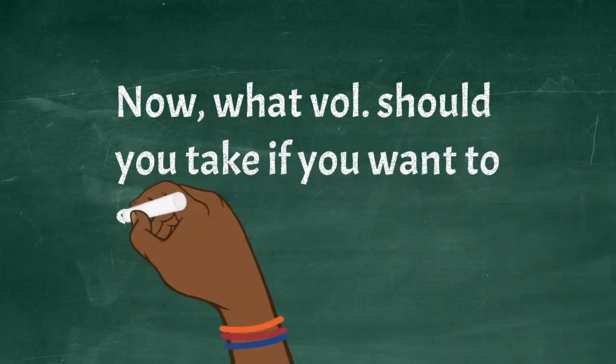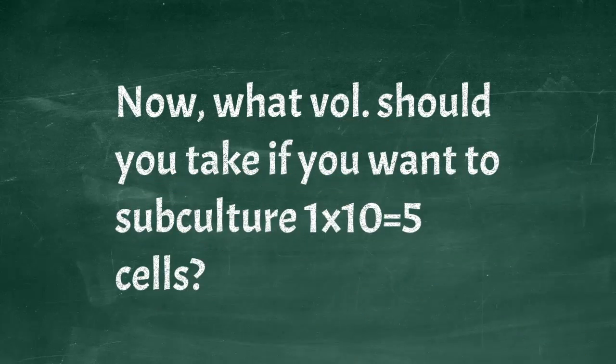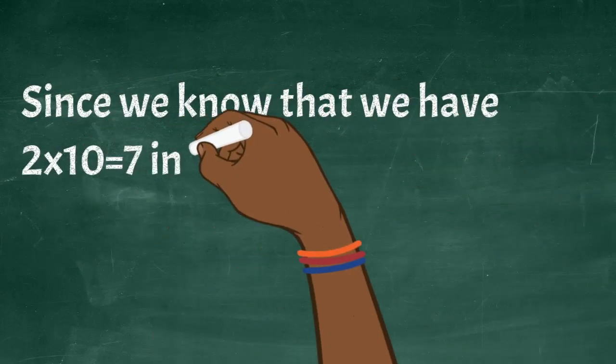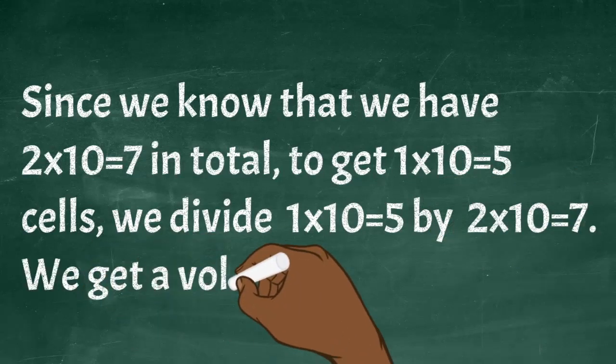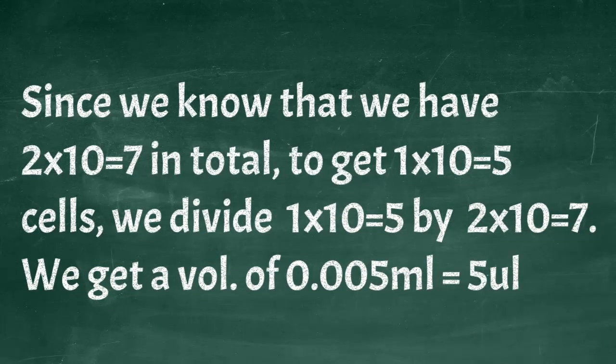Let's do a second one. What volume should you take if you want to subculture 1 by 10 to the 5 cells, so you want a hundred thousand cells? Since we know that we have 2 by 10 to the 7 in total, to get 1 by 10 to the 5 cells, we divide 1 by 10 to the 5 by 2 by 10 to the 7. We get a vol. of 0.005 ml = 5 microliters. But keep in mind that pipetting 6.66 microliters of cells will not be the most accurate strategy, so you can scale everything say 10 times and then dilute one in 10 and you'll be able to take 50 microliters instead.